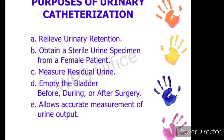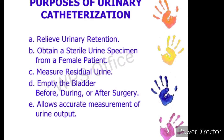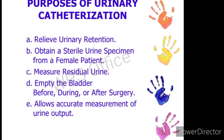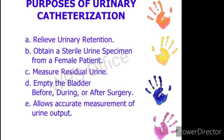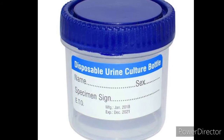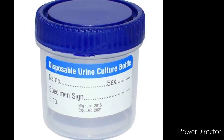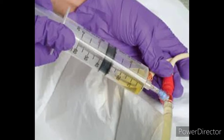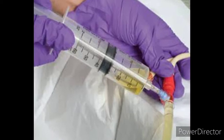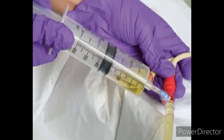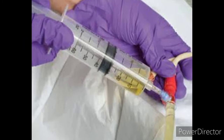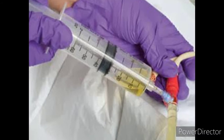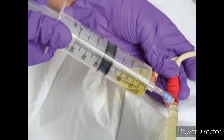The second purpose is to obtain a sterile urine specimen from the female patient. In an unsterile technique we know how to do urine specimen collection, but to obtain a sterile urine specimen, we need to collect from the urinary catheter using sterile technique. There will be a separate procedure for that, but we need urinary catheter insertion to obtain the sterile urine specimen.